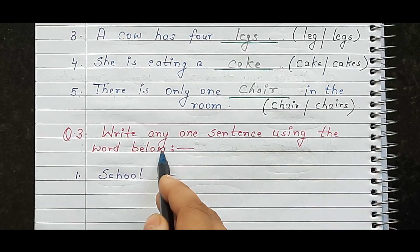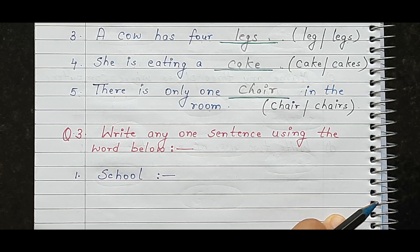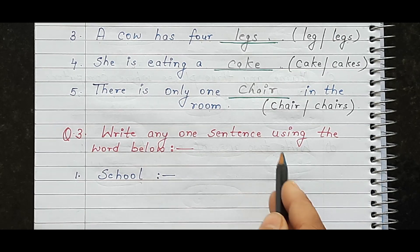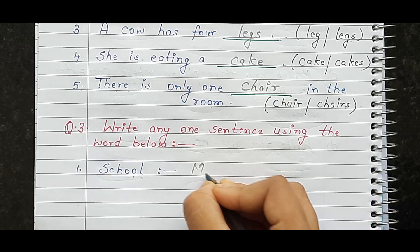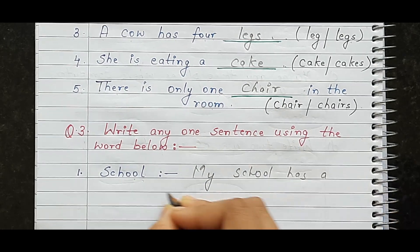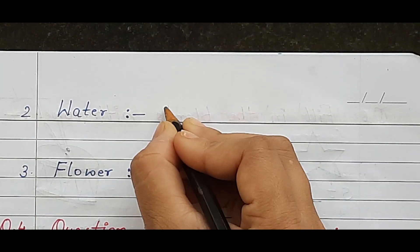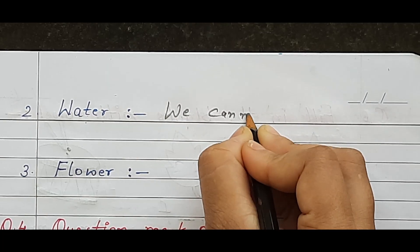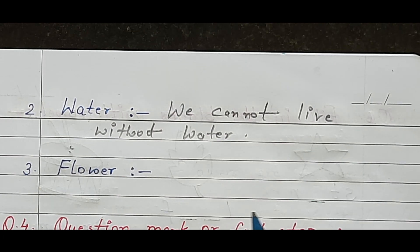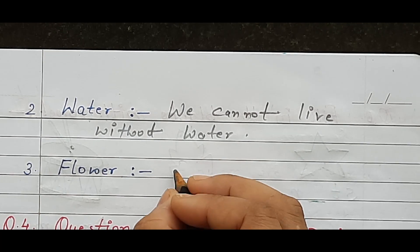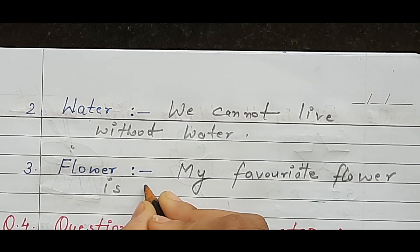Here is the next question: write any one sentence using the words given below. You can read the word and then write a sentence. For example, the word 'water' — we cannot live without water. The next word is 'flower' — my favorite flower is rose.